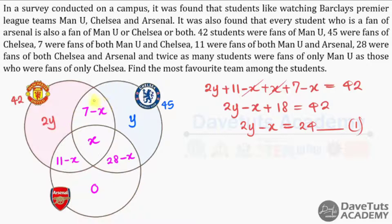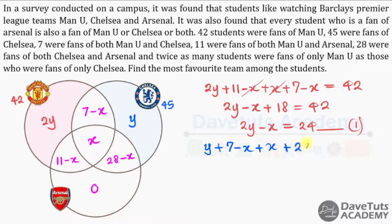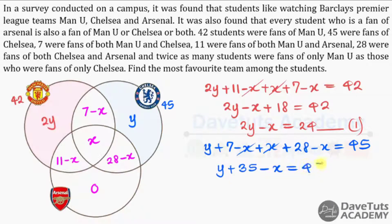For Chelsea, adding all regions: Y + (7 minus X) + X + (28 minus X) = 45. Simplifying, we get Y + 35 minus X = 45, so Y minus X = 10. This is Equation 2. We now have a set of simultaneous equations — Equation 1 and Equation 2 — that we can solve.